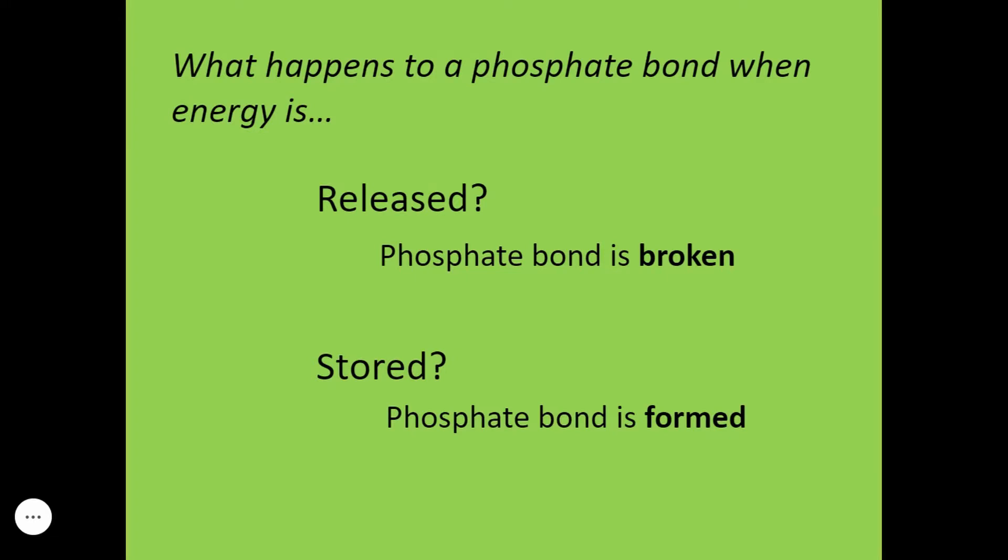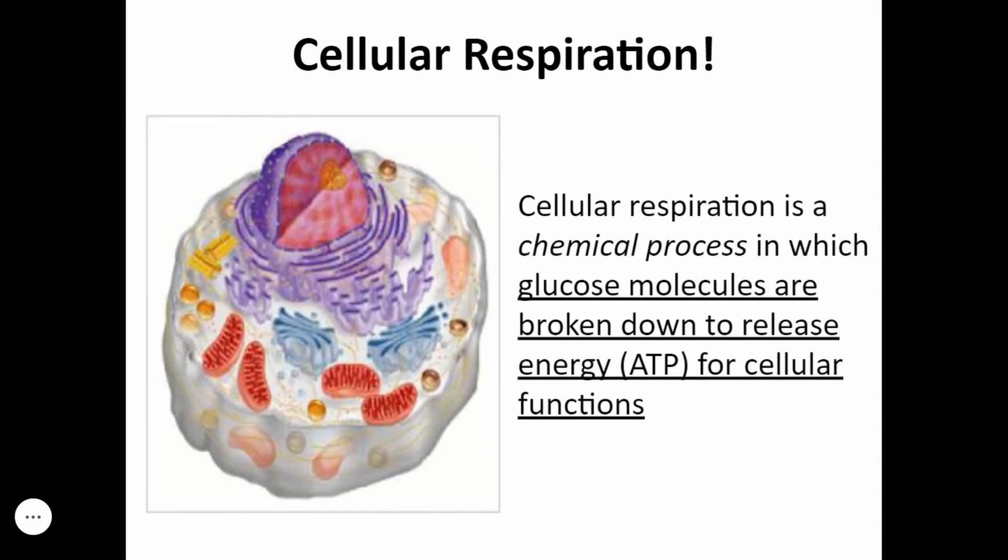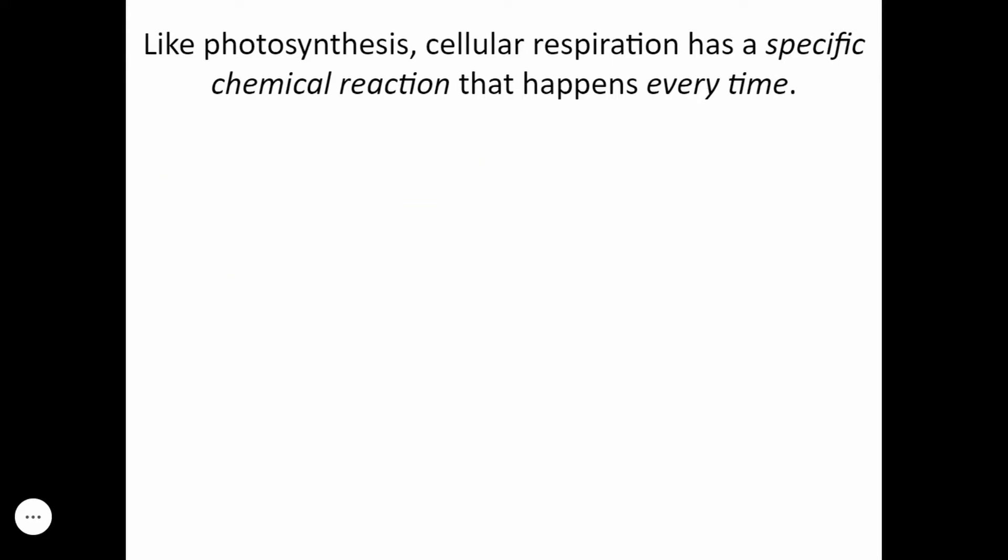Cellular respiration is a chemical process in which glucose molecules are broken down to release ATP that's needed for cellular functions. Like photosynthesis, cellular respiration has a specific chemical reaction that happens every time. And it's going to actually look kind of familiar to you.